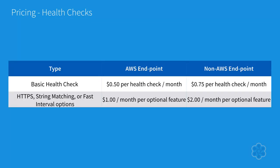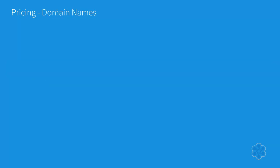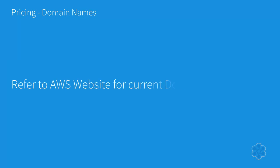Health checks are priced based on the type of check and whether or not this is an AWS or non-AWS endpoint, and the price for this is shown in the table. If you wish to purchase a domain from Amazon, you should refer to the website for current pricing for TLDs.